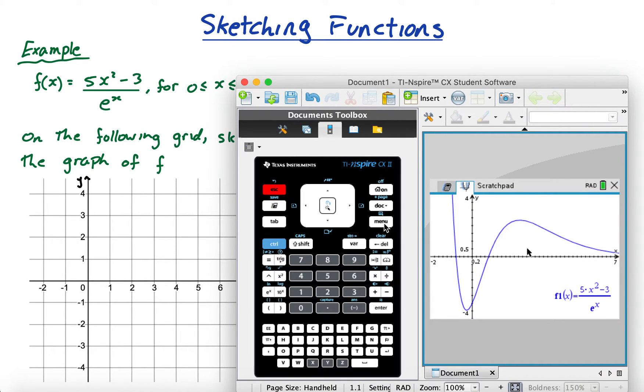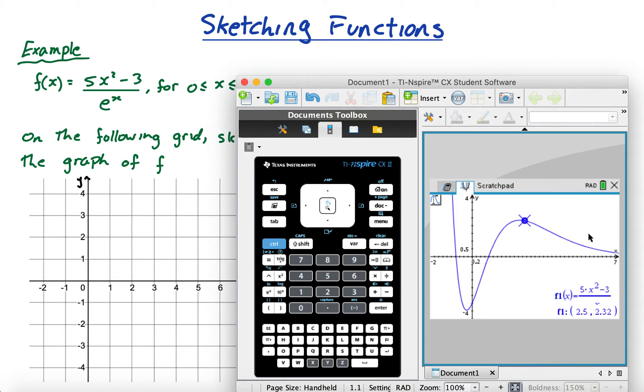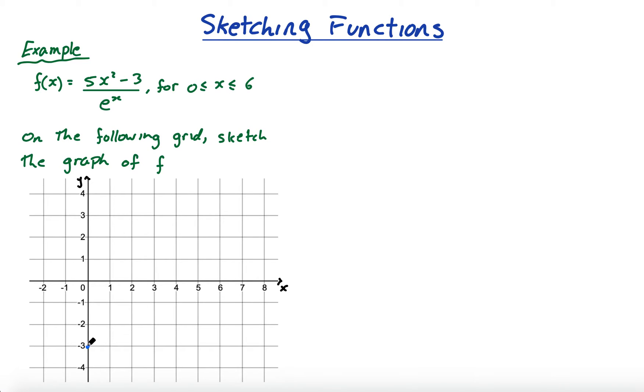A function I really like is this menu trace function. So if you click trace, graph trace, you can move this along and you get all the different points that you want. So let's start with the y-intercept. The y-intercept it tells me is 0, minus 3. So I'm going to draw a point at 0, minus 3.